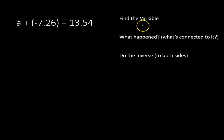We're going to follow the same exact steps. Find our variable. In this case, our variable is the letter a. Our variable is always the letter inside the equation. We ask ourselves, what happened to that variable, or what's connected to it? It's connected to plus negative 7.26. That's what happened to it.